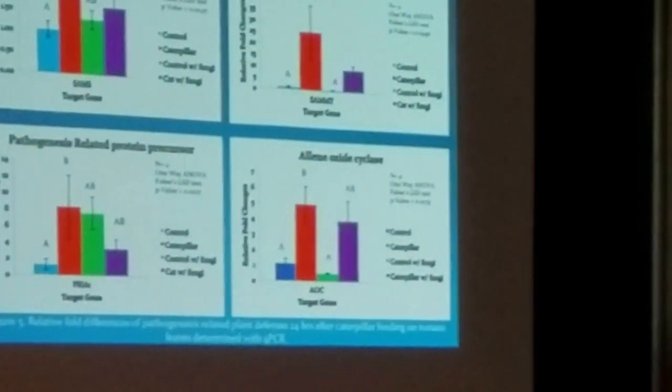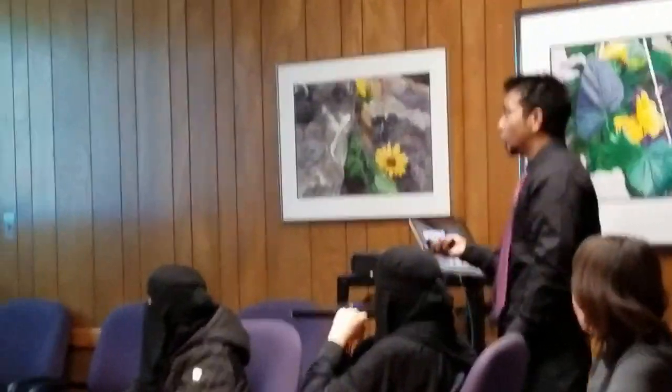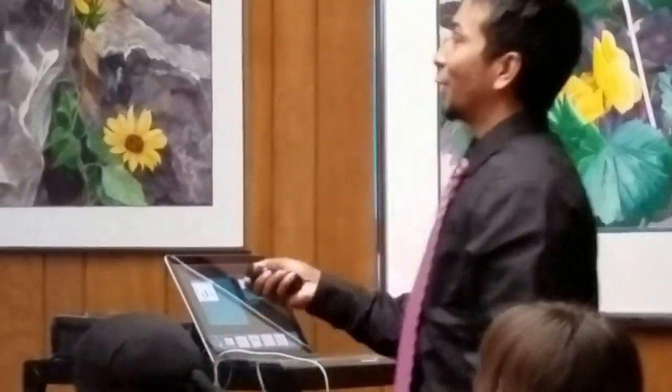This is allene oxide cyclase. This gene digests some of the allene, so the caterpillar suffers from nutrient deficiency. Again, we can see the fungi is changing its gene expression throughout. The lipoxygenase destroys lipid peroxidation and produces some reactive oxygen species like hydrogen peroxide and aldehyde, which are detrimental for microbes. Here, the caterpillar up-regulates it, but the fungi up-regulates it even more.